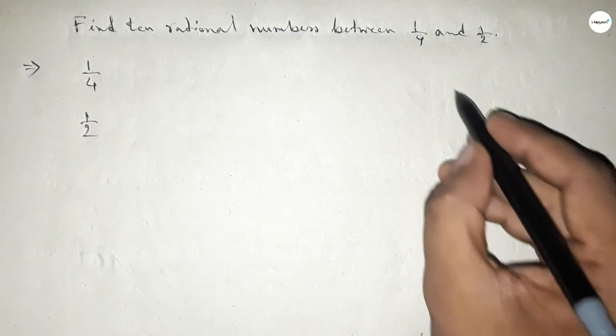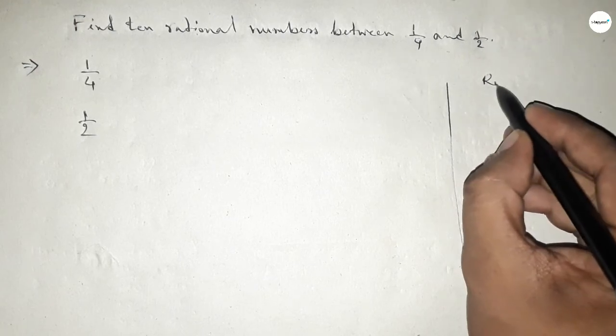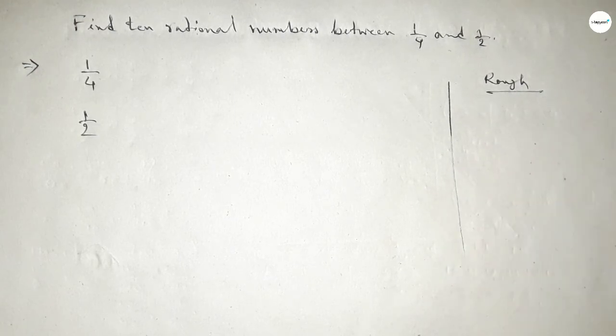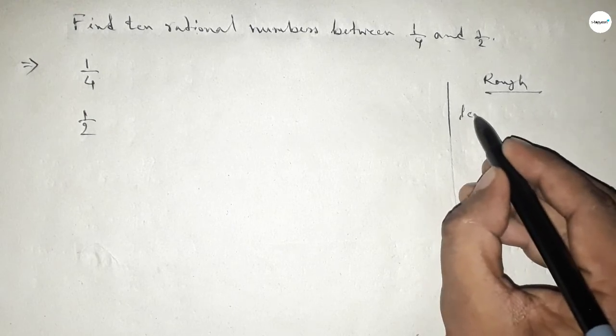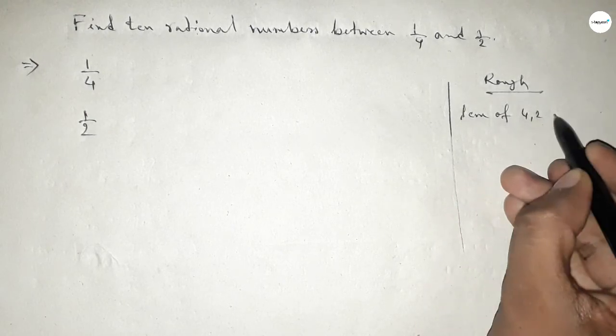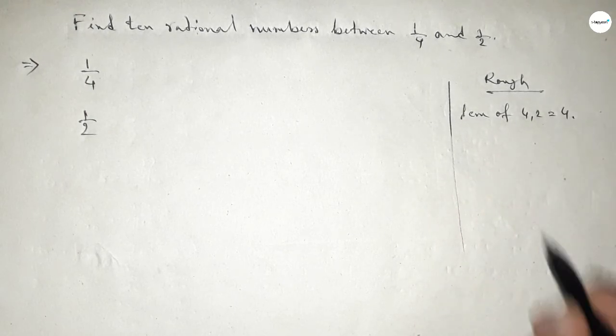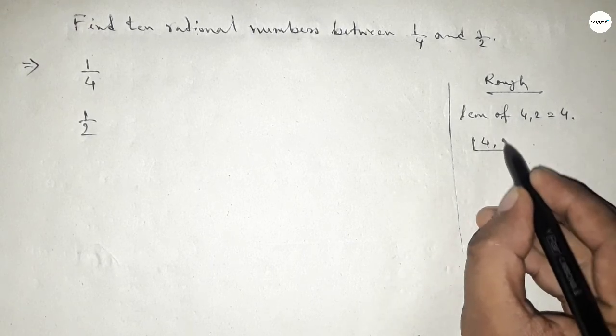Now discussing some important calculations here. The denominators of both are not the same, so first we have to find out the LCM of 4 and 2, and their LCM is 4. If you factorize 2, then this is the factorization, so their product is the LCM 4.